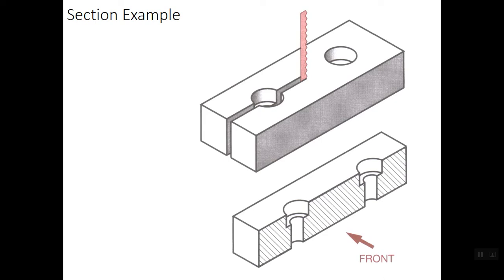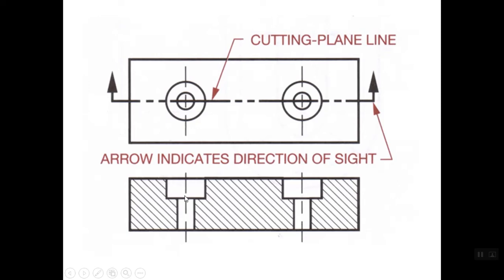The basic idea is what would things look like if you took a saw blade and sawed through the object. So here's our block of metal with a couple of counterbore holes. If we were to slice right down the center of those holes and then look at that view, what would we see?